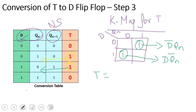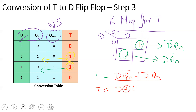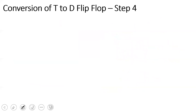Coming to this conversion, the expression derived is: T equals D·QN̄ plus D̄·QN. This is XOR logic, so T equals D XOR QN. This is the expression for T to D flip-flop conversion — toggle to data flip-flop conversion. Step 3 is complete.